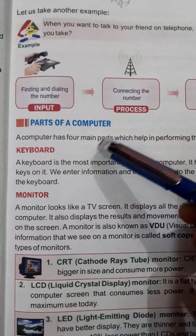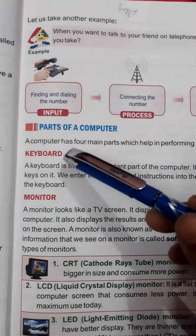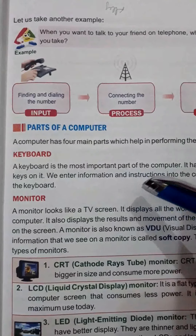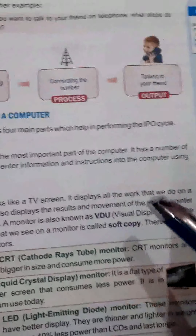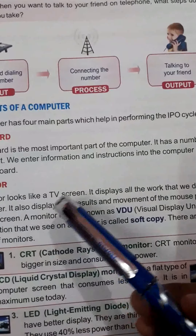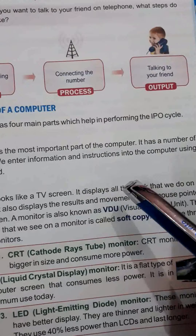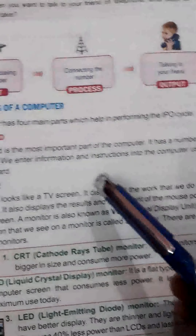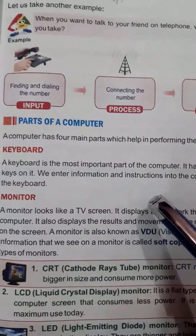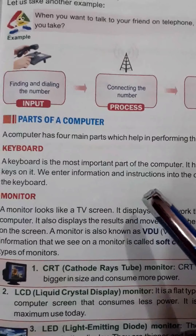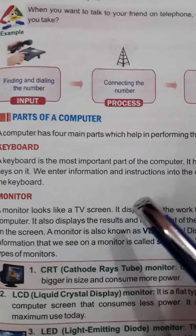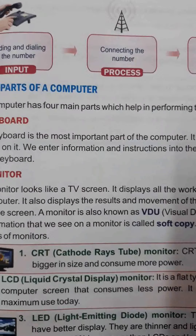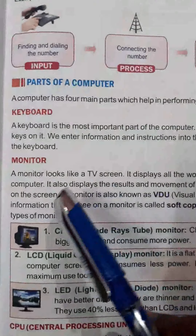The first part of the computer is the keyboard. The keyboard is the most important part of the computer. It has a number of keys on it. When we enter information and instructions into the computer, we use the keyboard. Whatever data or instruction we want to enter, we do it through the keyboard. You are also familiar with the keyboard from our practical lab classes.